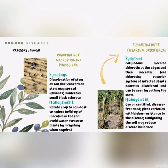Avoid water stress to plants by irrigating when required. The second disease is Fusarium wilt, also known as Fusarium oxysporum. The symptoms for Fusarium wilt are cotyledons becoming chlorotic at the edges, then necrotic, leaf chlorosis, and the vascular system of infected plants becomes discolored, which can be seen by cutting the stem. The management is to use certified disease-free seed and plant varieties with higher resistance to the disease. Fumigating the soil may reduce disease incidence.